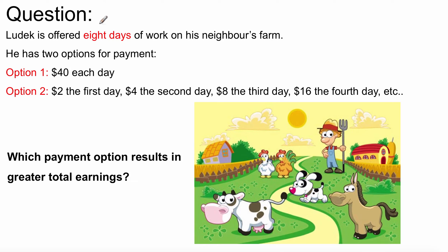So let us begin. Ludek is offered eight days of work on his neighbor's farm. He has two options for payment. Option 1: $40 each day. Option 2: $2 for the first day, $4 for the second, $8 for the third, $16 for the fourth. Essentially it doubles each day. So, which payment option, one or two, is the best for Ludek? How's he going to make the most money out of these two options after eight days?